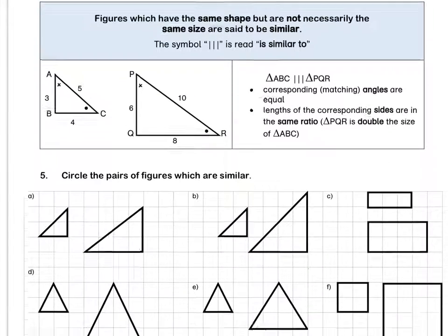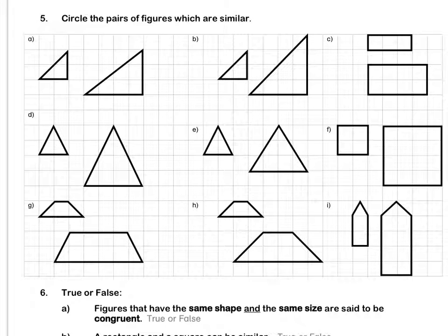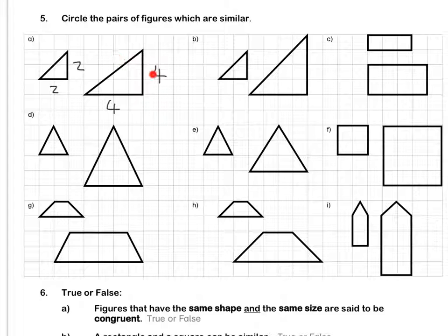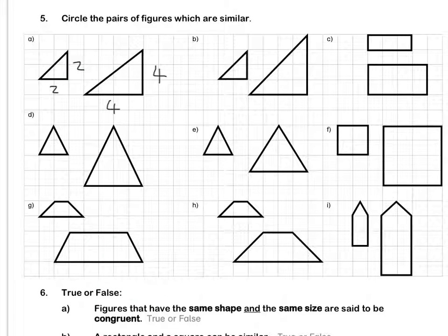Let's look at question five: circle the pairs of figures which are similar. For A, this triangle is two by two. The bigger triangle is four by four. I've doubled my base and I've doubled my height. Therefore, this length is going to be the same as well, and we can see that all the angles are the same. These two triangles are similar.